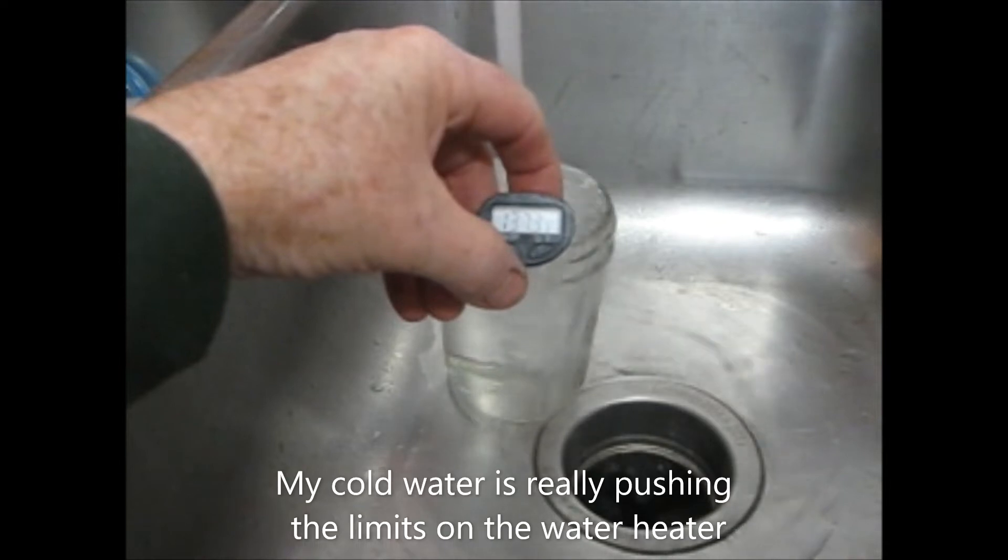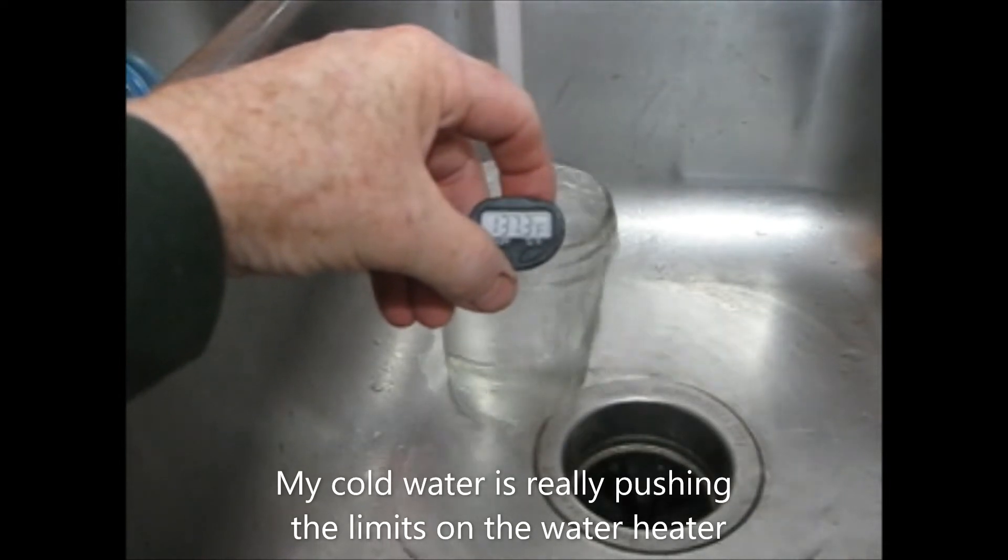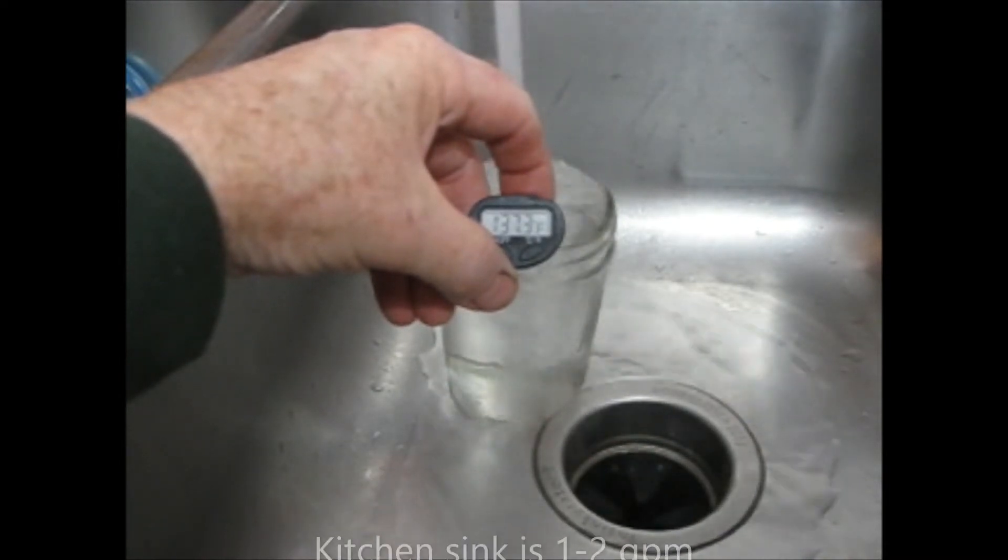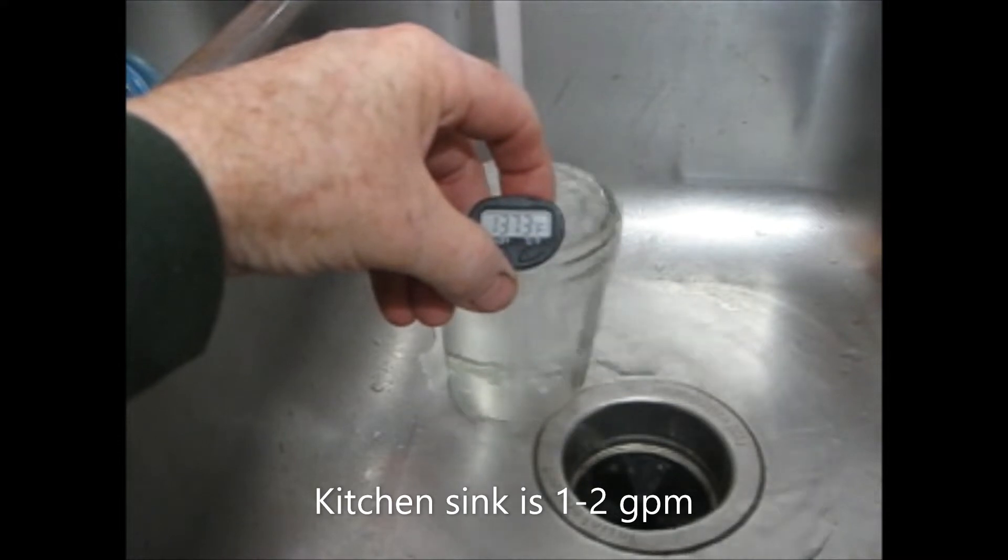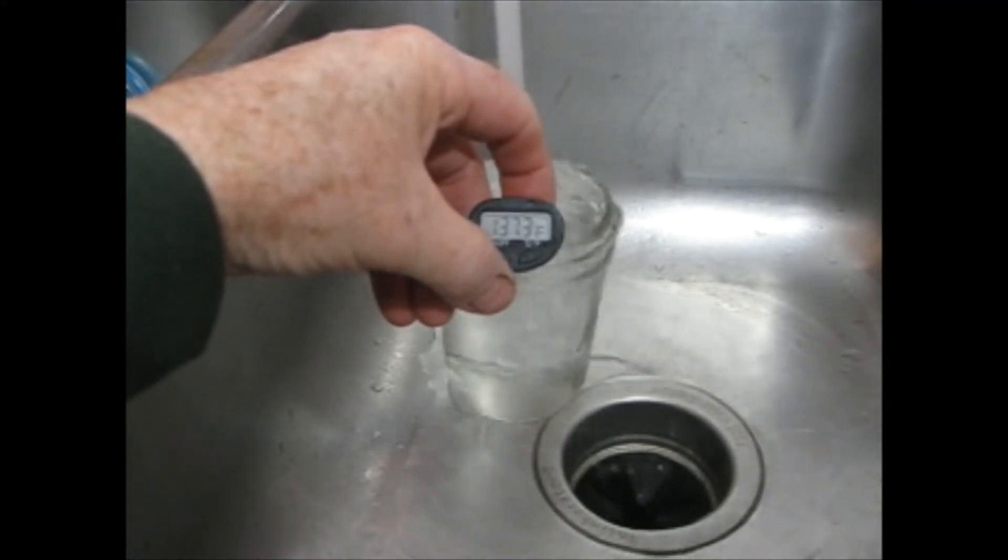If you remember we set our water heater downstairs to 140 so we're at 137. That's not too bad. This is only one single appliance that is running. So what we're going to do, I'm going to go turn on my shower in one of the bathrooms and see what happens.